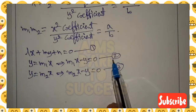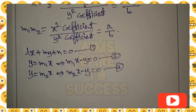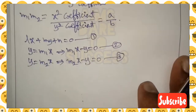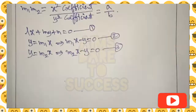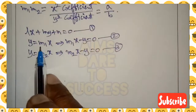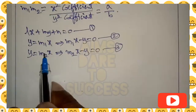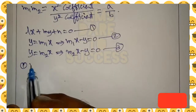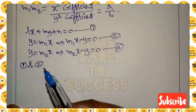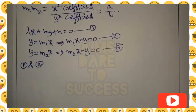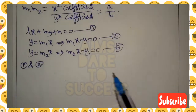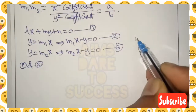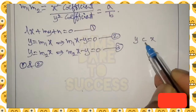Now we want to find the area of the triangle using these three lines. Area of a triangle means we need three points. So first I want to solve equations 1 and 2, and after that continue with 1 and 3, and 2 and 3.